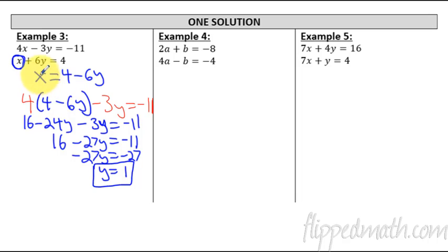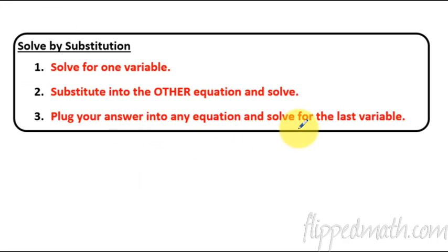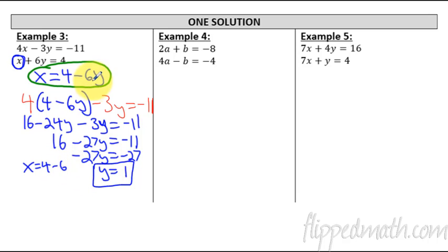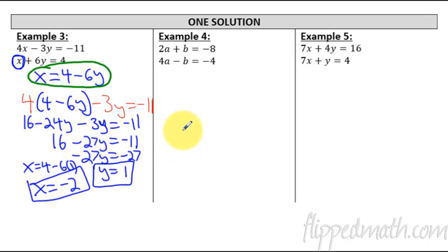Step three: plug your answer into any equation and solve for the last variable. Since x is already isolated in the equation x equals 4 minus 6y, that's the easiest choice. Substituting y equals 1: x equals 4 minus 6 times 1, so x equals negative 2. Now pause the video, try Example 4 on your own, and then check your answer.